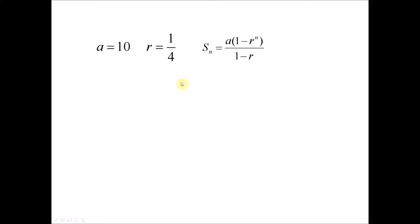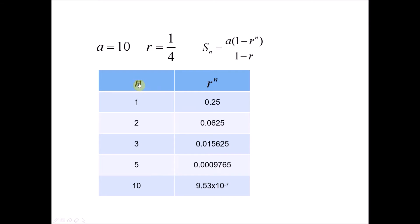Let's say you are given a geometric progression with first term a = 10 and common ratio r = 1/4. To find the sum of the first n terms, we use the formula for |r| < 1. We build a table with n increasing from 1. When n = 1, r^n = (1/4)^1 = 0.25. When n = 2, r^n = (1/4)^2 = 0.0625. You can see that as n increases, the value of r^n becomes smaller and smaller.